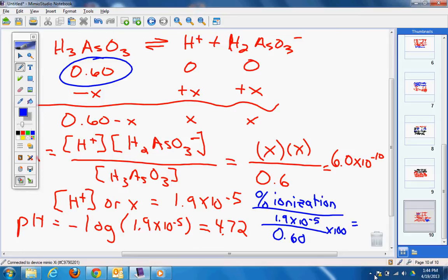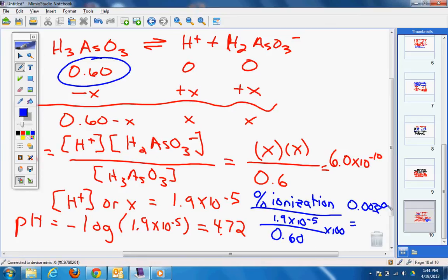And we get 3.2 times 10 to the negative 3, or 0.0032 percent. Percent ionization should be no problem. Those of you in blue 2 should definitely make a note of number 1 on the packet, especially the percent ionization.